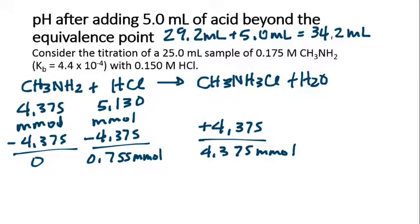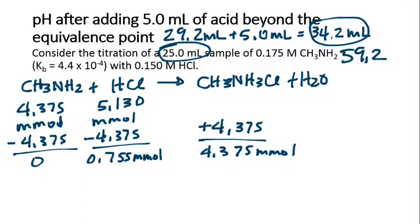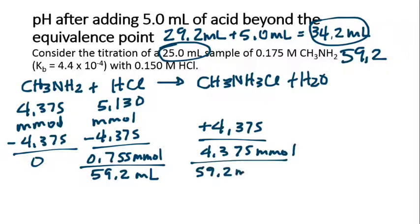We use stoichiometry in terms of moles or millimoles to figure out what's going on. Then we have to convert this into concentrations, using the correct total volume. Our total volume is the amount of acid added plus the amount of base originally present. So we've got 34.2 plus 25, a total of 59.2 milliliters. Dividing by 59.2 milliliters: 0.755 divided by 59.2 gives 0.01275 molar.